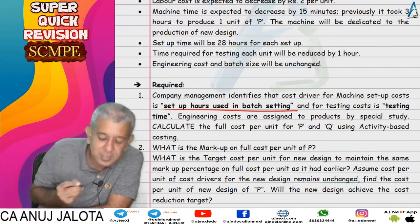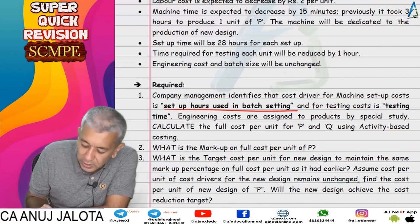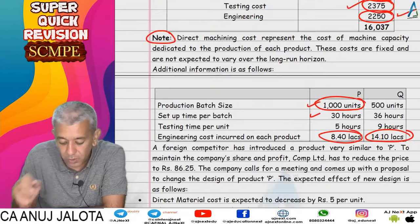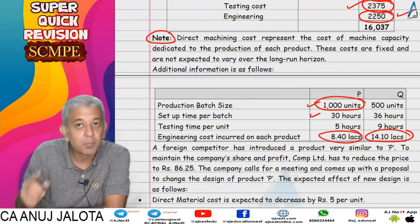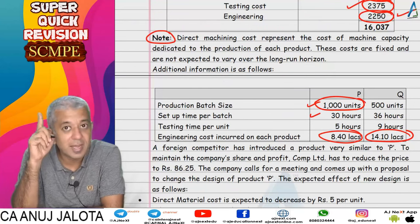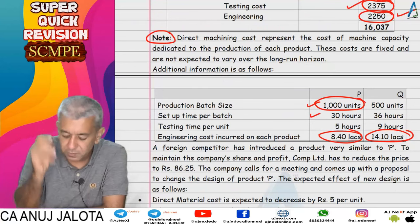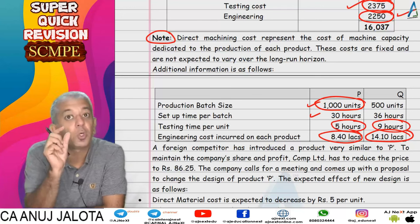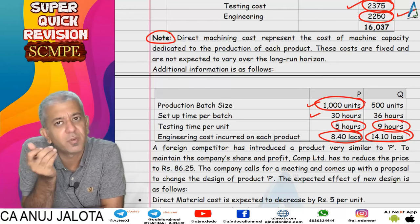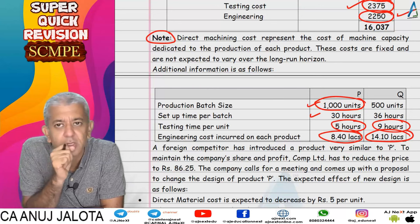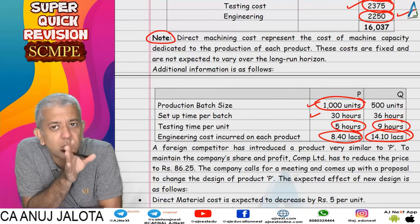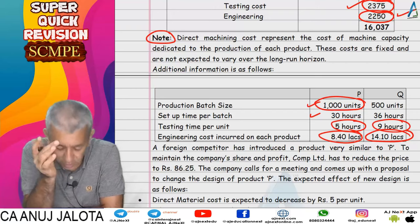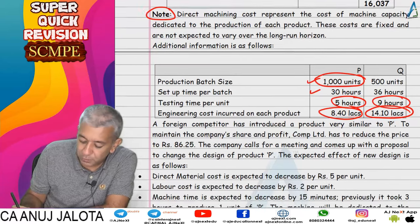For testing cost, the cost driver was testing time. Testing time was found by taking the number of units (1 lakh and 50,000) and multiplying by the testing time per unit to get total testing hours. Dividing gave the cost driver rate, and ultimately the cost per unit for both product P and product Q. But then a problem arose.